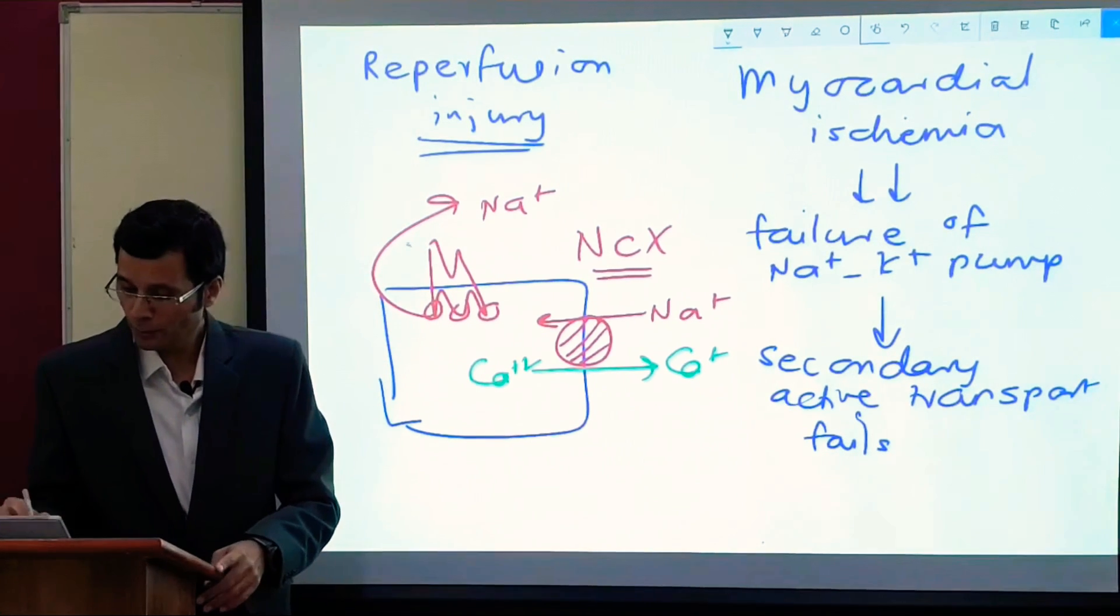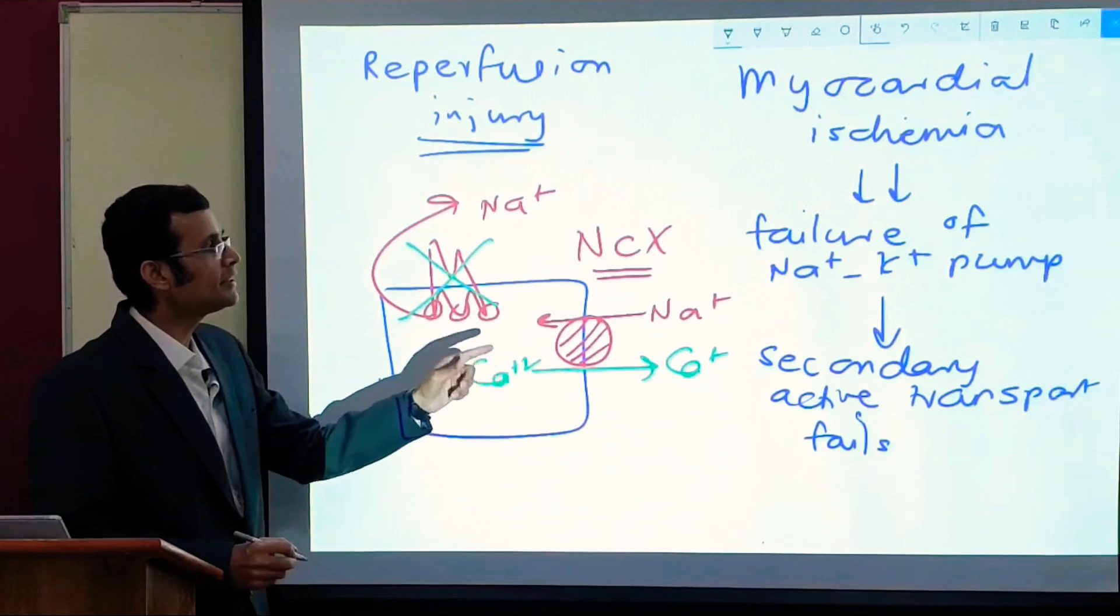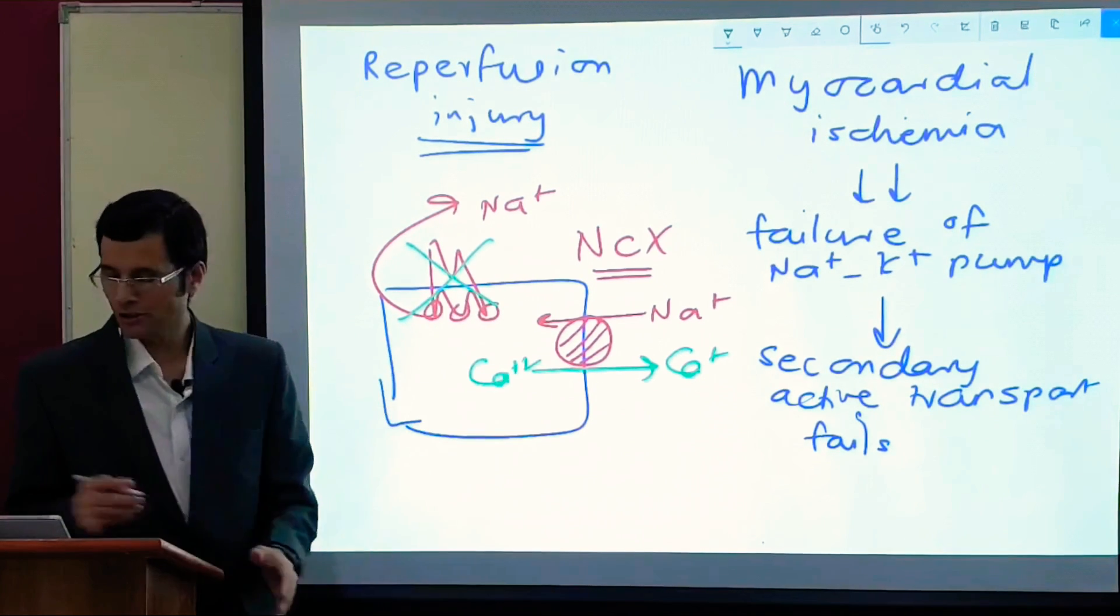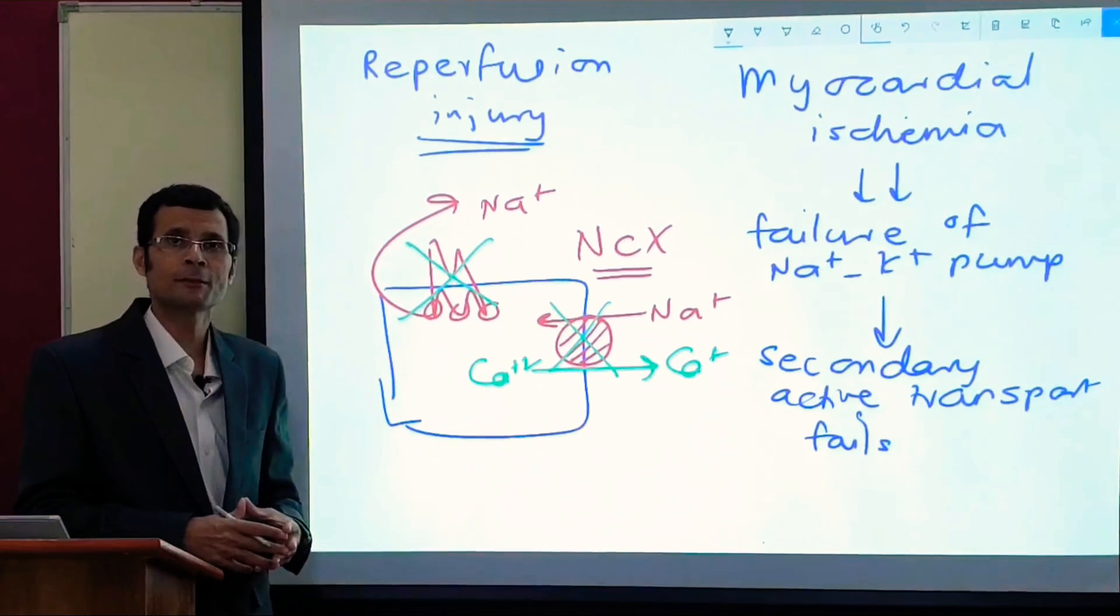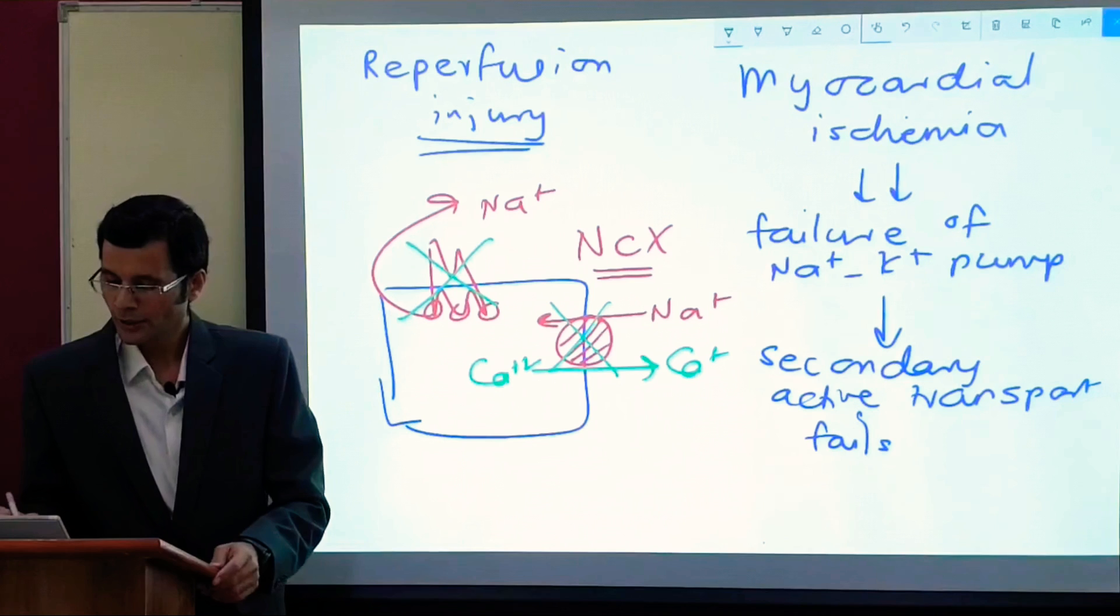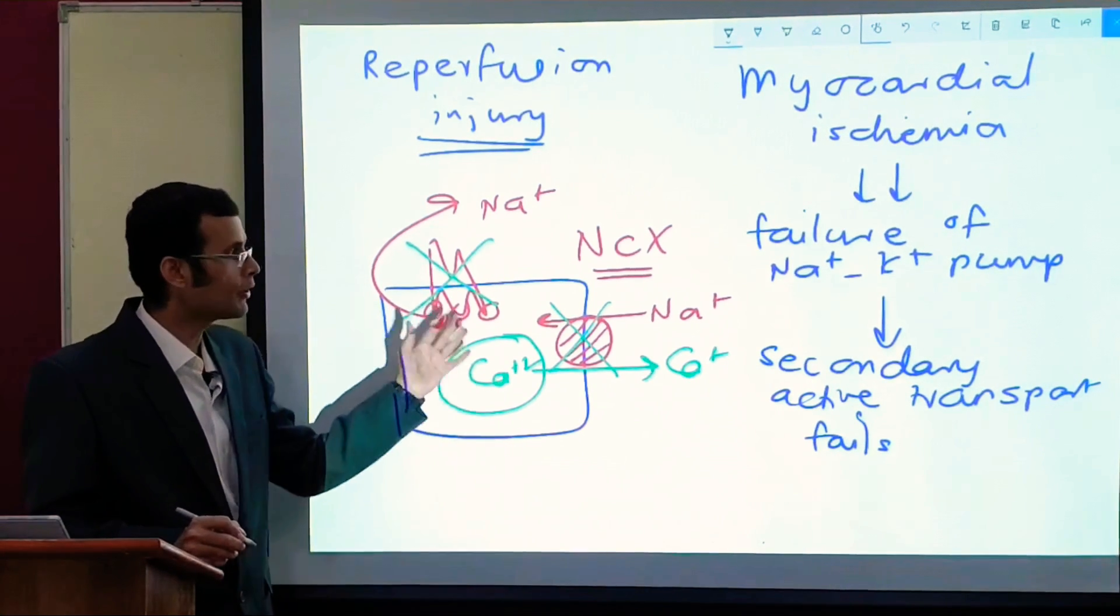Now if the sodium-potassium pump fails and because of that the NCX, sodium-calcium exchanger, the secondary active transporter also fails after myocardial ischemia, the result is accumulation of calcium in the intracellular fluid in the myocardial fiber.